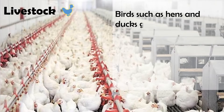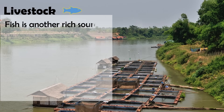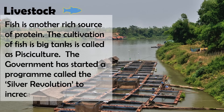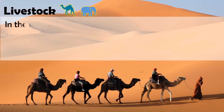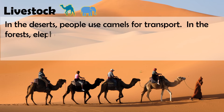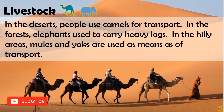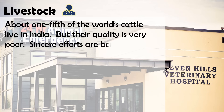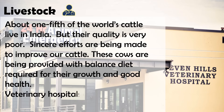Birds such as hens and ducks give us eggs and meat. They are rich in proteins, and big poultry farms have been set up to rear them. Fish is another rich source of protein; the cultivation of fish in big tanks is called pisciculture, and the government started the Silver Revolution to increase fish production. In deserts, people use camels for transport; in forests, elephants carry heavy logs; and in hill areas, mules and yaks are used. About one-fifth of the world's cattle live in India. Efforts are being made to improve cattle quality through balanced diets and veterinary hospitals in villages.